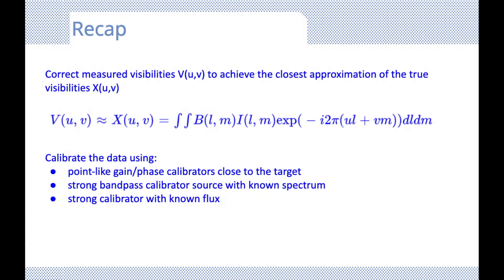As we saw from Ben's visibility lectures, from the interferometer what we measure is the complex visibilities of the source. The basic need for calibration is to correct these measured visibilities — we'll call them V of UV — and approximate very closely our actual true visibilities, X of UV, through our calibration.